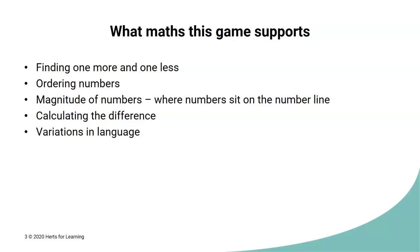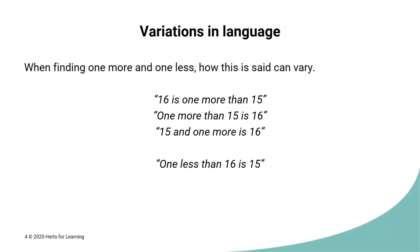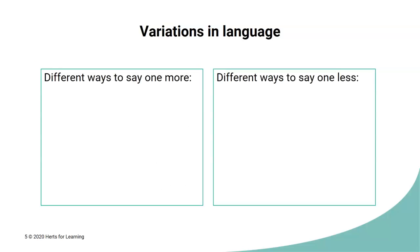The other aspect the game supports is all the different variations in the language that we can use when we talk about one more, one less. When finding one more and one less, how this is said can vary. We could say 16 is one more than 15. We could also say one more than 15 is 16. We could also say 15 and one more is 16. These subtle variations in language can confuse children, especially between the top two. Let's think about one less now. So, we could say one less than 16 is 15. We could also say 15 is one less than 16. And finally, we could also say 16 and one less is 15. We probably wouldn't say that last one because it sounds slightly clunky and unusual. But when you're playing the game with your child, try and say as many different variations as possible so the children get familiar with all of them.